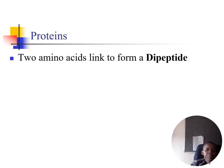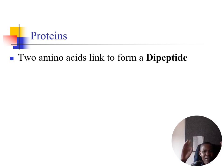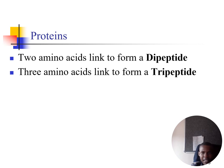When two amino acids link together they form what you call a dipeptide. A peptide is an amino acid linked to another amino acid. When three amino acids link they form a tripeptide. Four to ten amino acids linking together form what you call an oligopeptide.